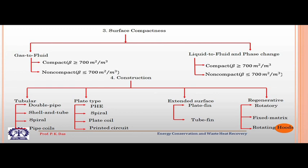Compactness is defined by a number beta. When beta is greater than 700 m²/m³ the heat exchanger is called a compact heat exchanger; when beta is less than this, it is not compact. This is an accepted definition. Compactness is very important for waste heat recovery because in many waste heat applications the delta T — the temperature difference driving force — is low, and we need a compact heat exchanger to extract a good amount of thermal energy within a given volume.